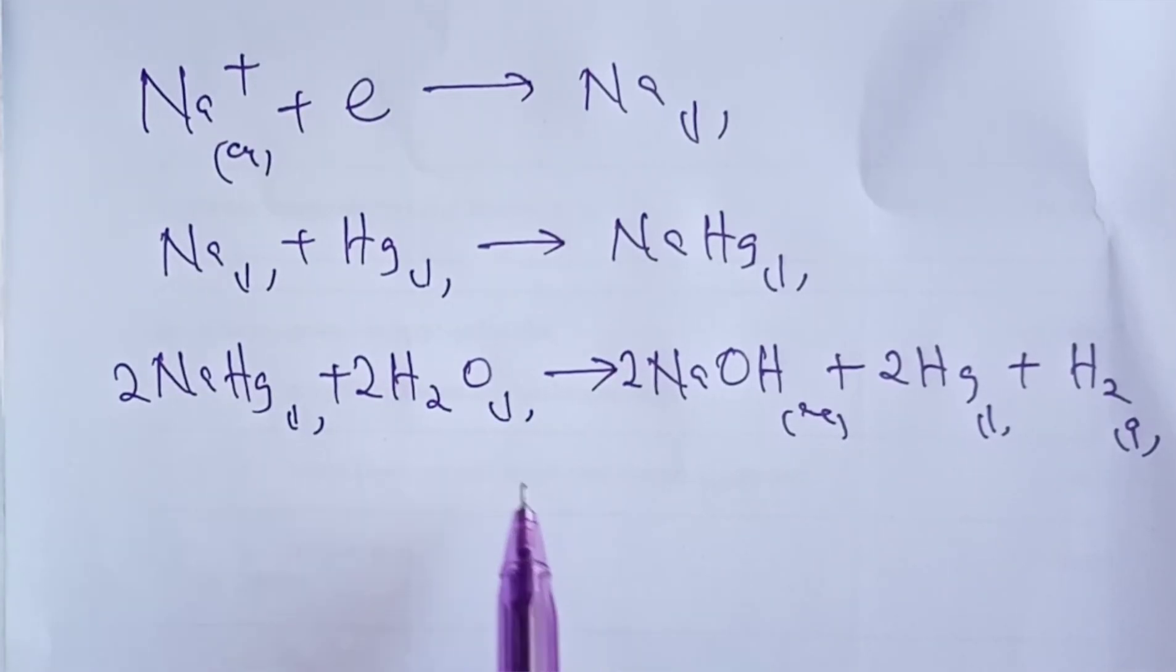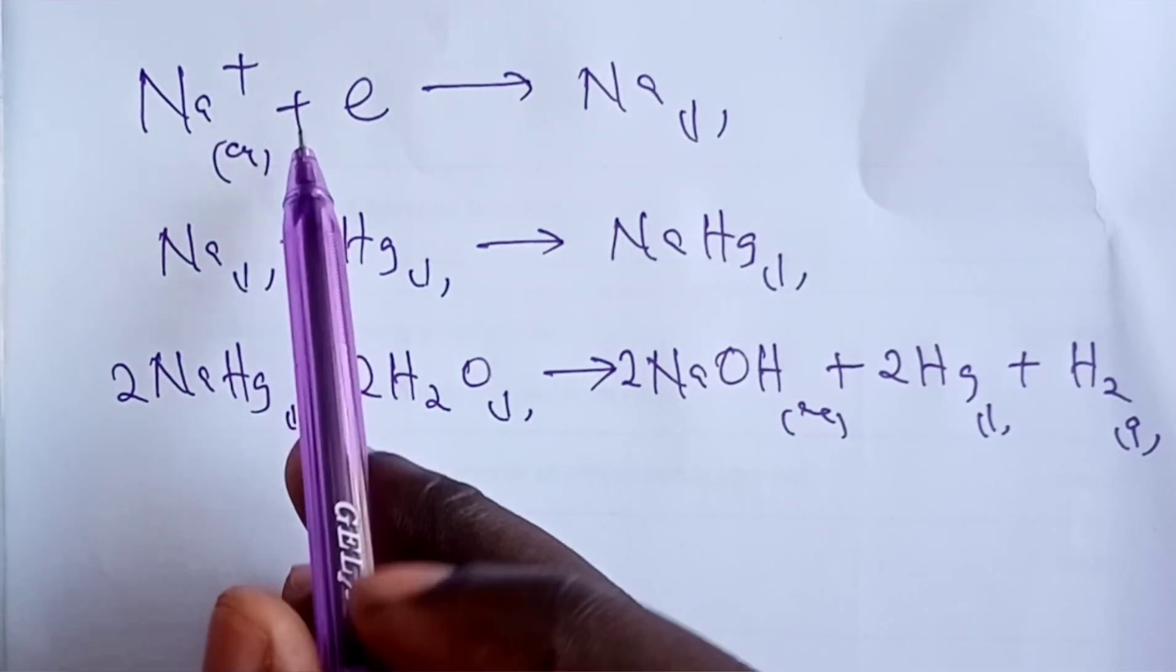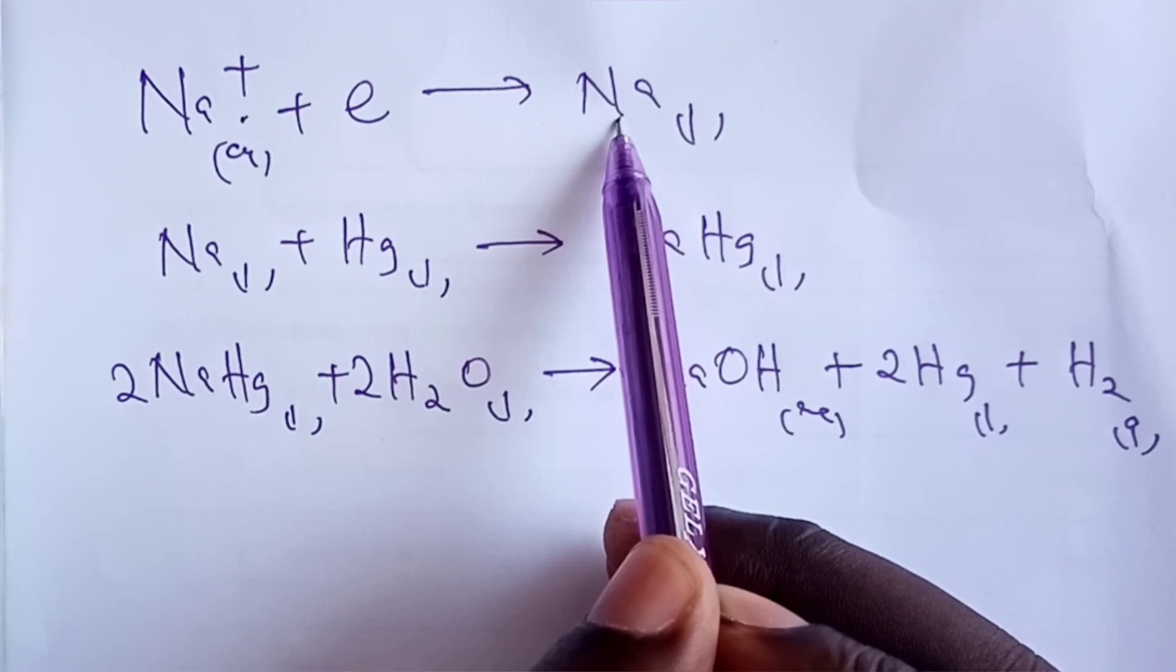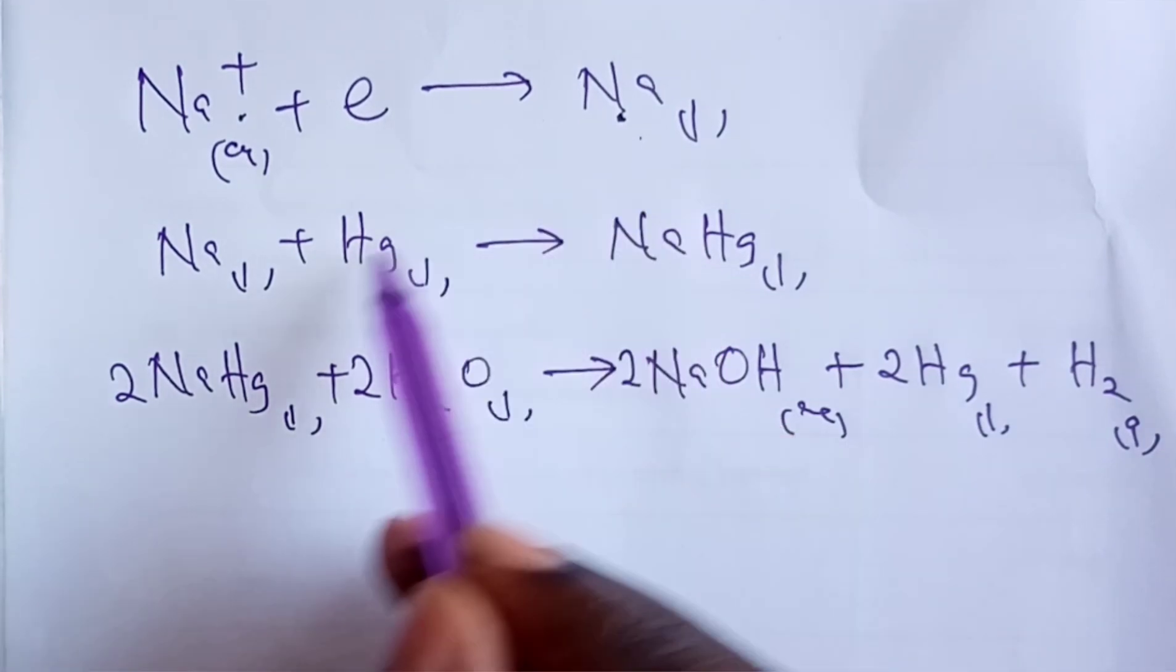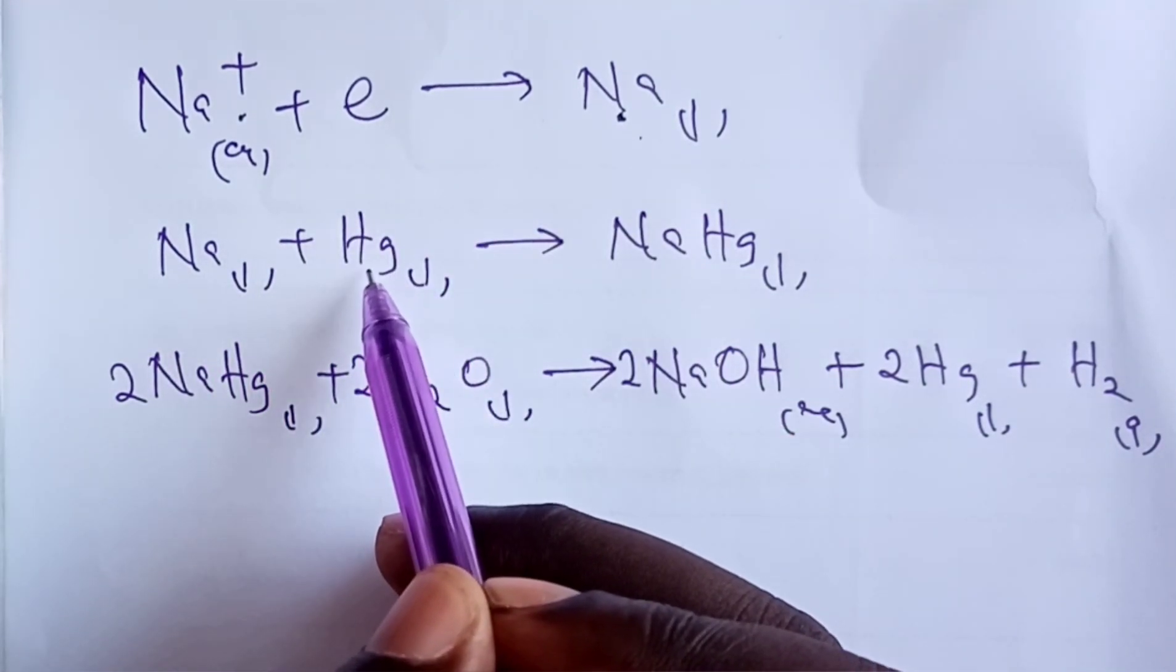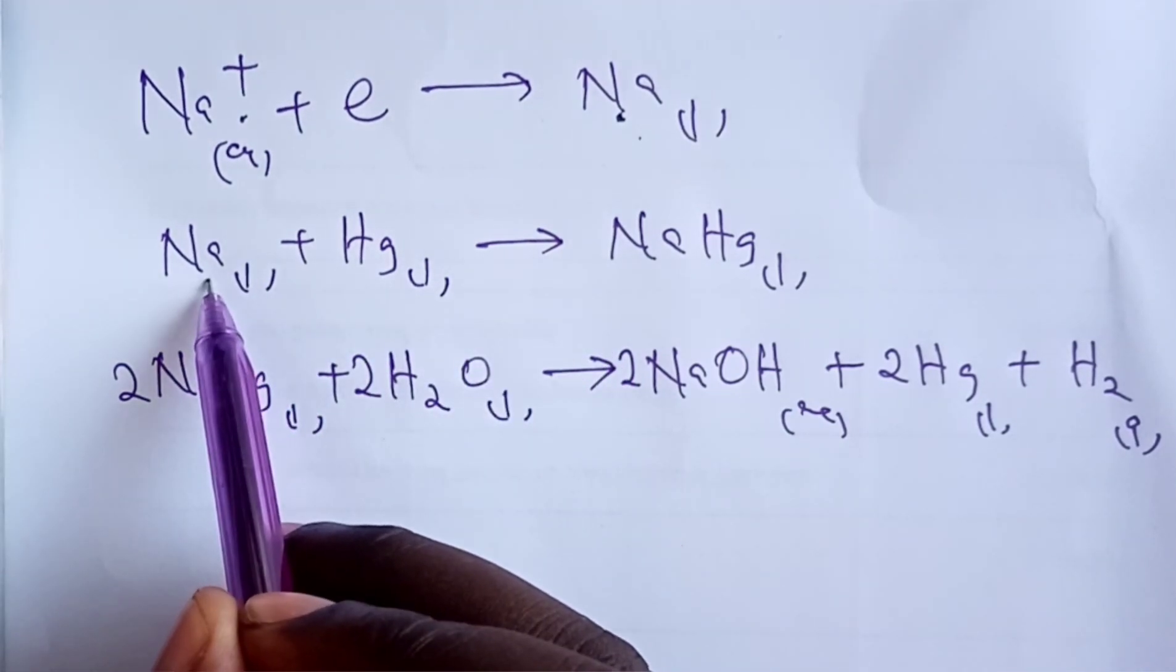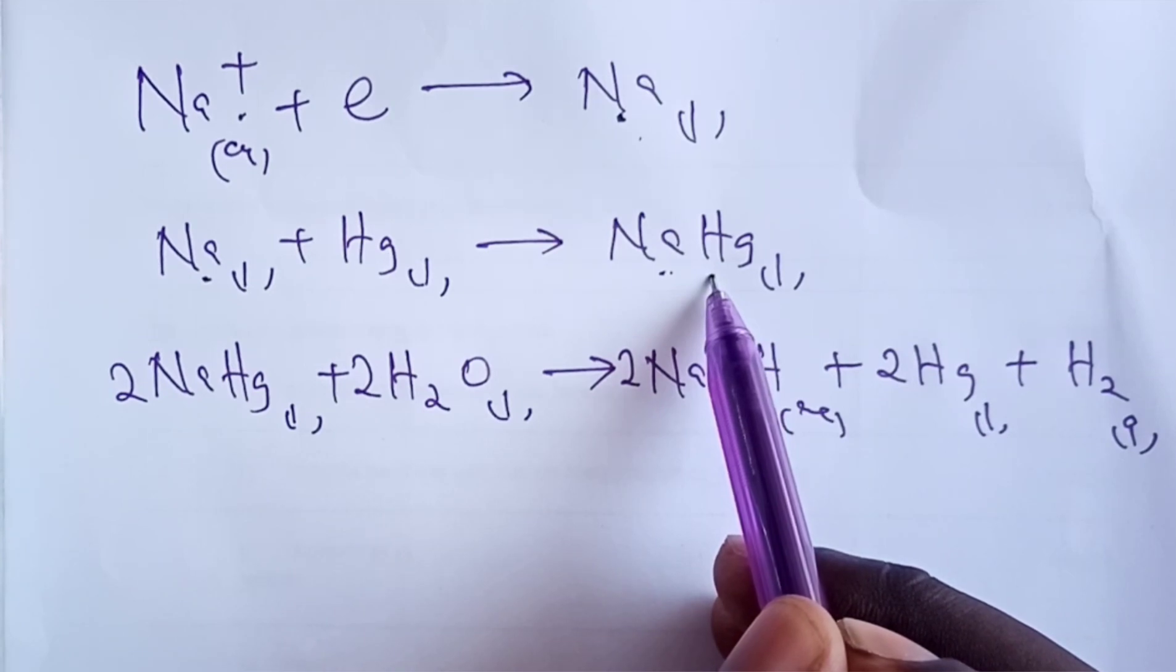Here are our equations. The first equation at cathode: we are discharging one mole of sodium ions to give us one mole of sodium. In equation two, the sodium formed is mixed with mercury to form sodium mercury amalgam. The conclusion is also that one mole of sodium is able to give us one mole of sodium mercury amalgam.